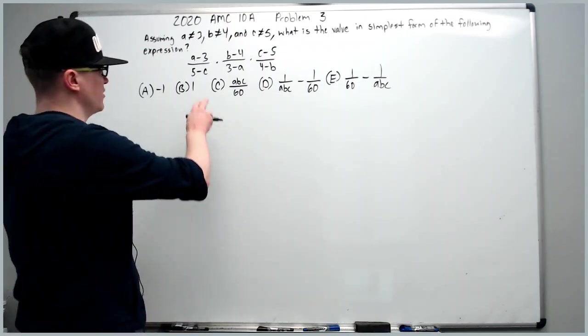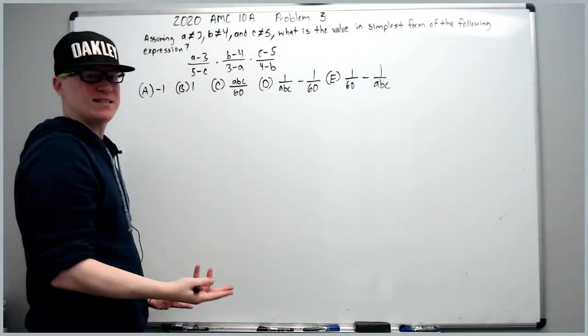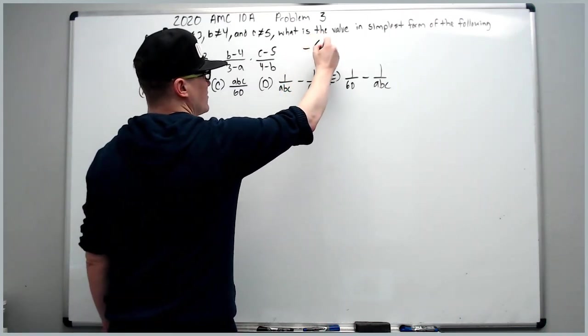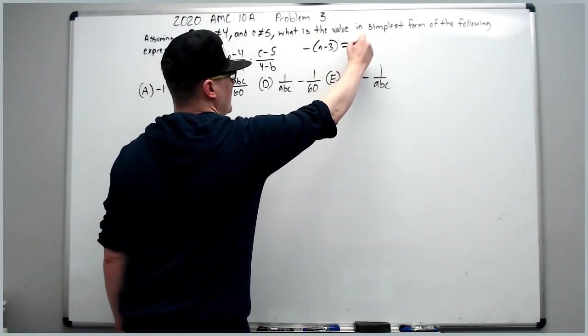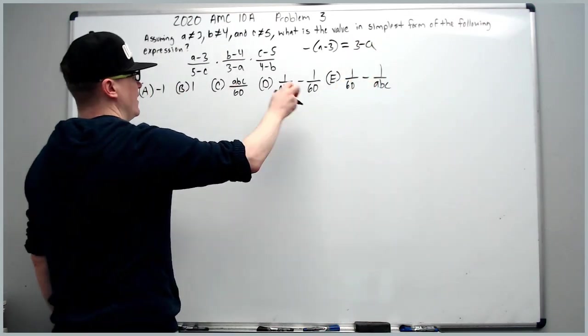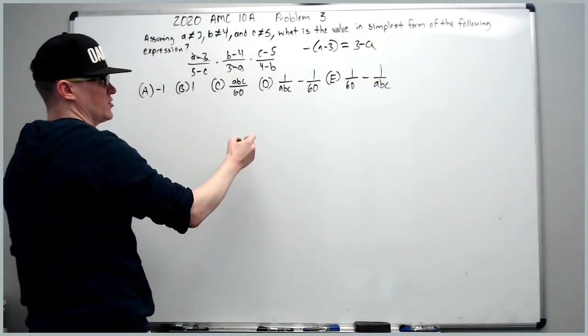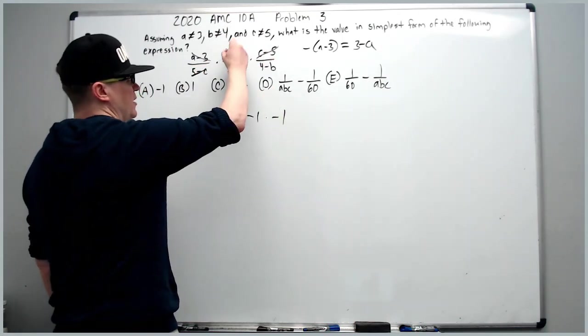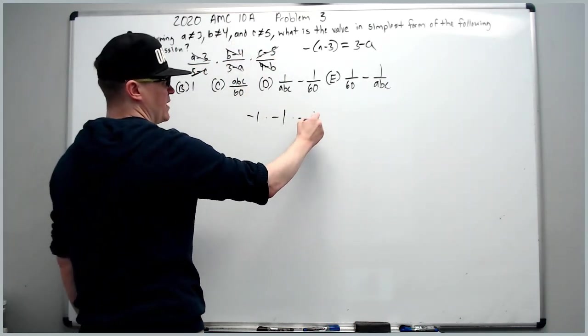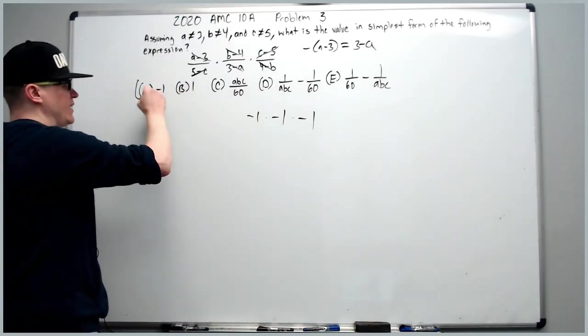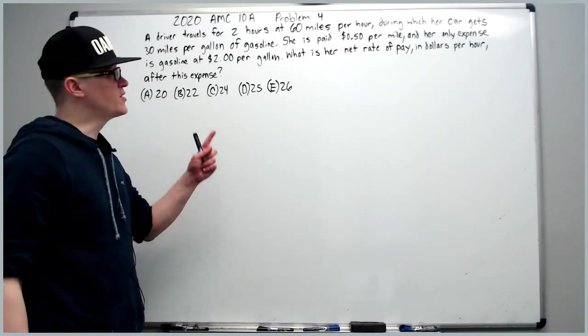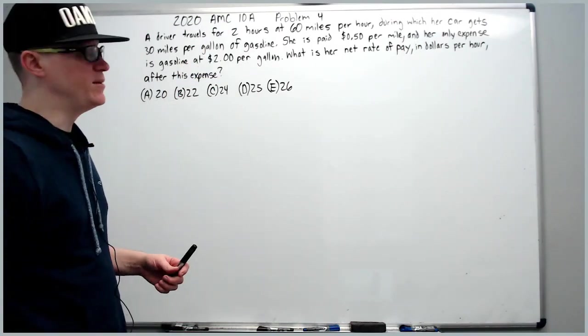What you want to observe is that A minus 3 and 3 minus A are identical if I pull out a negative sign. So negative times A minus 3 equals 3 minus A. And so because of that, this will cancel to make negative 1. 5 minus C and C minus 5 will cancel. B minus 4 and 4 minus B will cancel. You have three negative 1s, the product of which is negative 1.